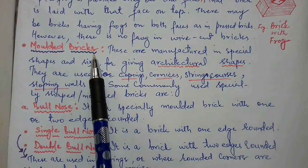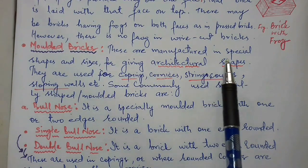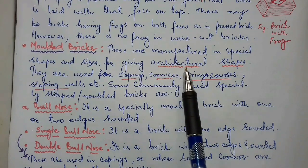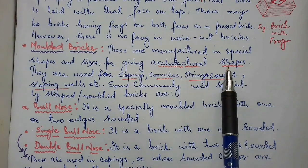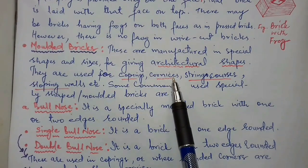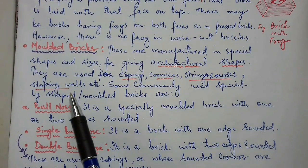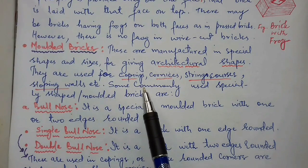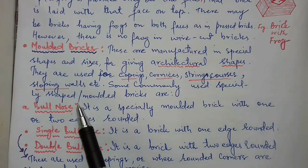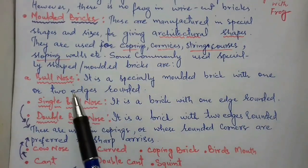There may also be bricks having frogs on both sides, as in pressed bricks. However, there is no frog in wire cut bricks. Another term is molded bricks — these are manufactured in special shapes and sizes for giving architectural shapes. They are used for copings, cornices, skirting courses, sloping walls, etc. Some commonly used specially shaped molded bricks are shown below.